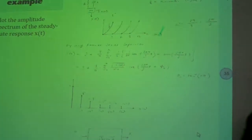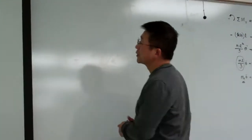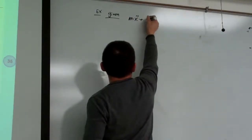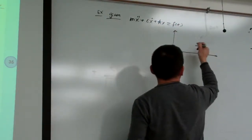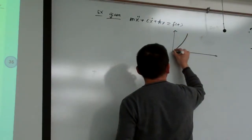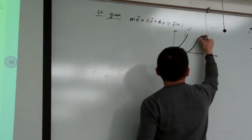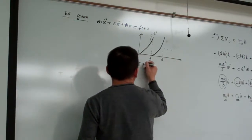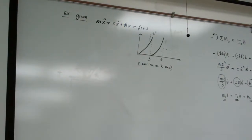For this system, we are given a system mx double dot plus cx dot plus kx equal to f of t. The forcing function f(t) is t-squared repeated, and the period is equal to three seconds. That is the loading information.